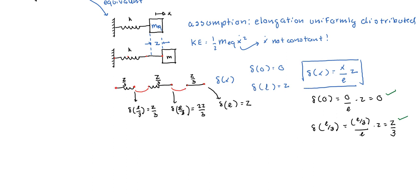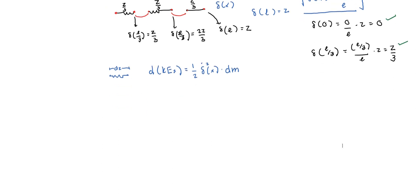Now let's consider some element of the spring that has a length dz. What is its kinetic energy? The kinetic energy of this differential element of the spring is equal to one-half times the velocity squared times its mass dm. So if it has a length dz, then its mass is dm. What are δ̇ and dm? That's what we're going to deal with next.